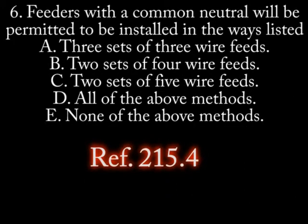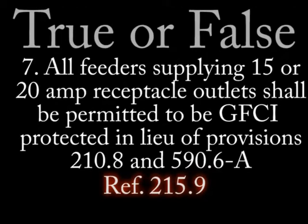Number 6: Feeders with a common neutral will be permitted to be installed in the following fashion: A. Three sets of three-wire feeders. B. Two sets of four-wire feeders. C. Two sets of five-wire feeders. D. All of the above. E. None of the above.